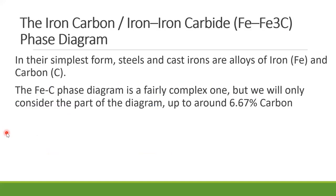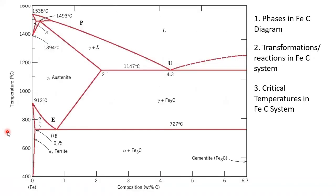You have seen the theory of the iron-carbon diagram. This phase diagram is plotted for the iron-carbon system of steel and cast iron, and we are studying it only up to 6.6% carbon. We studied the various phases: delta ferrite, gamma austenite, alpha ferrite, and cementite.